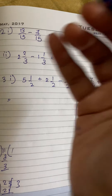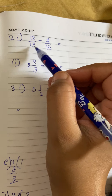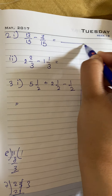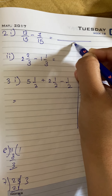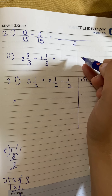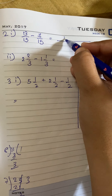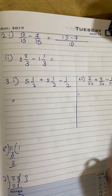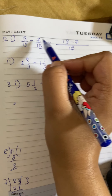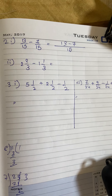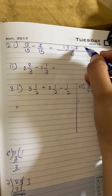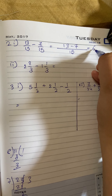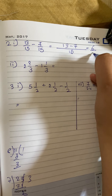For subtraction also the denominators are the same, so write one common denominator 15 and on top write 13 minus 7. Since there is a minus sign, it stays as minus. 13 minus 7 is 6 by 15.